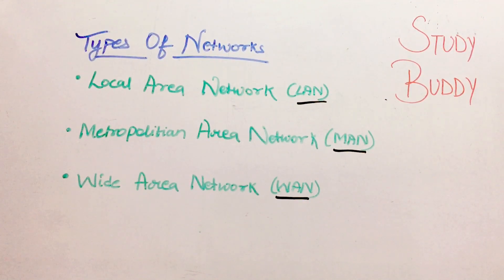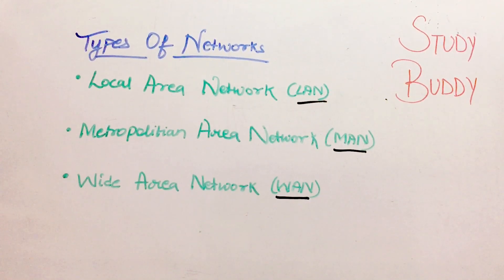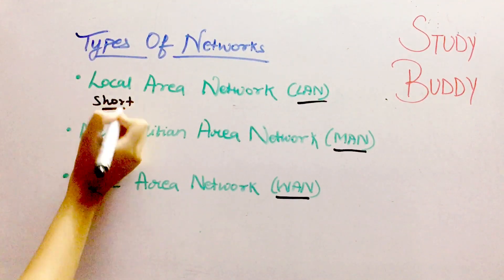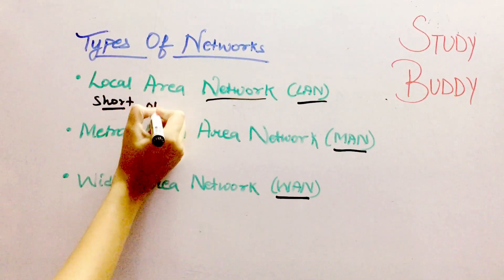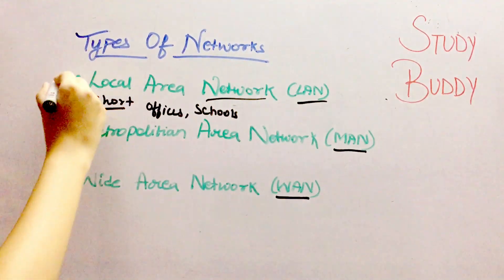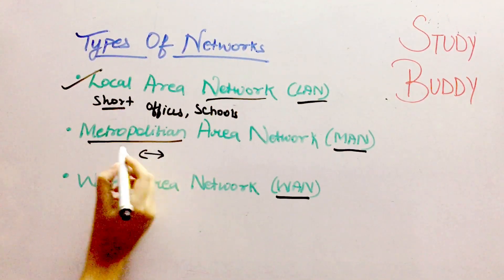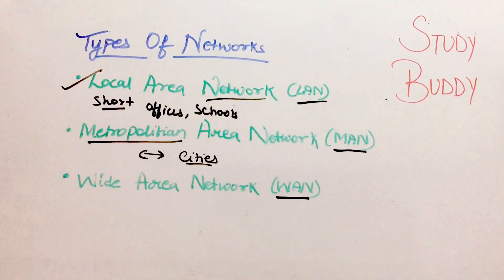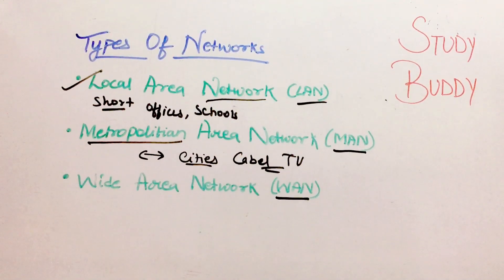Let's start with LAN first. A Local Area Network is defined for a short area. If you want to create a small network in a small area, we use LAN — like in your offices, colleges, or schools. Next is Metropolitan Area Network. In two cities, the network is created through MAN. For example, cable TV networks come under MAN.